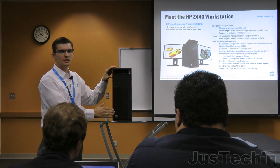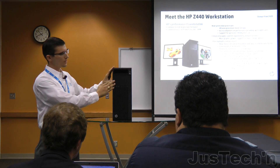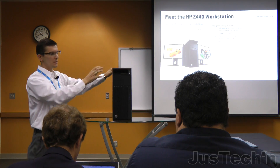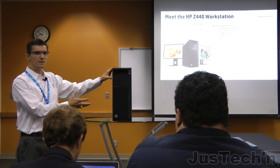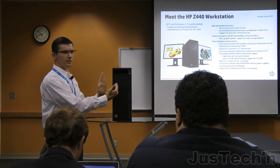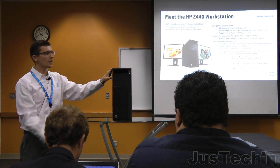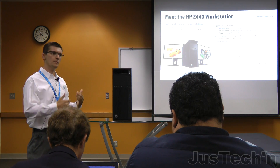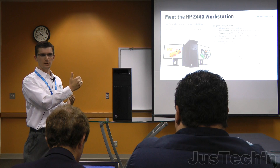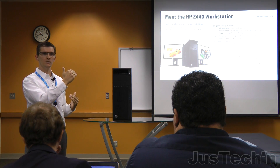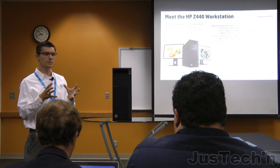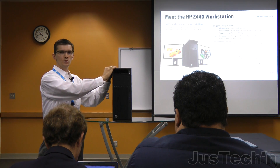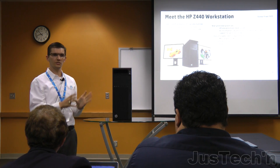One big change generation-to-generation is the updated industrial design. A big feature of that is integrated front and back handles 100% of the time — having a front handle was an option on the previous generation. It's a brand-new chassis, and the width dimension in this orientation is less than 7 inches. For OEM customers who may be racking this solution, anything over 4 rack units or 7 inches prevents maximizing rack space, so being narrower and half an inch shorter than the previous generation is ideal for that market.